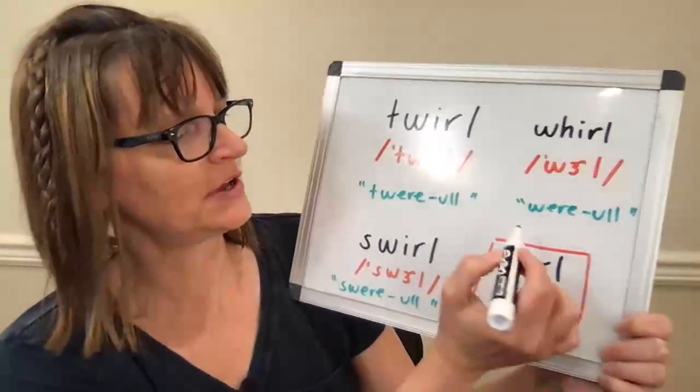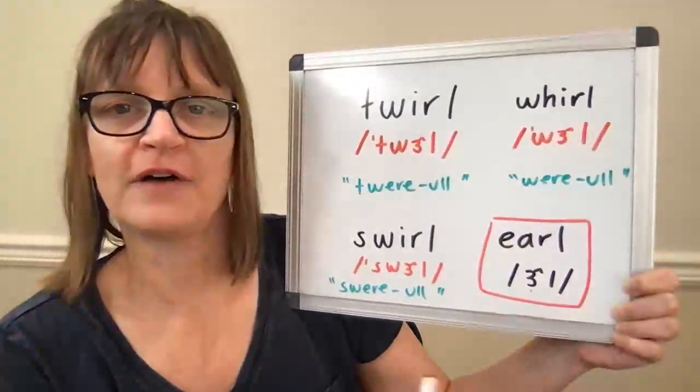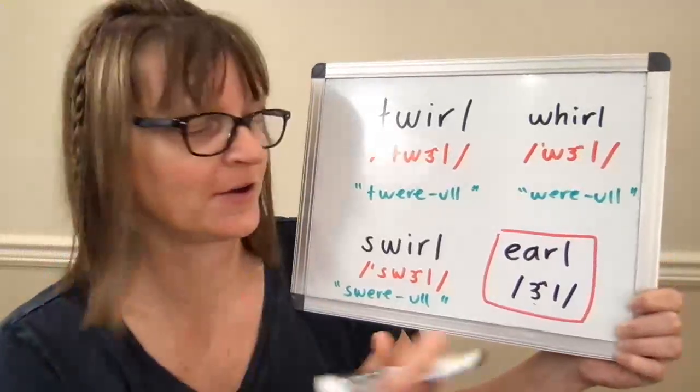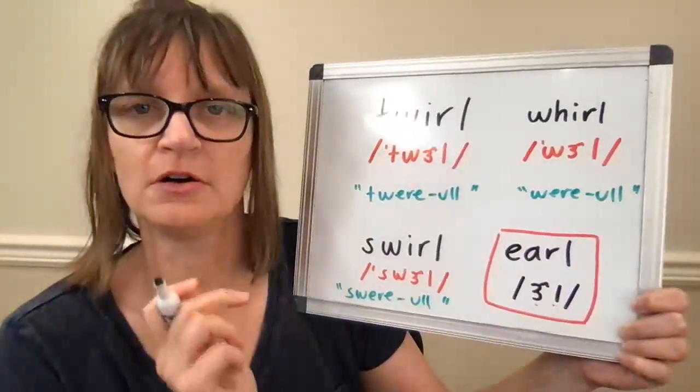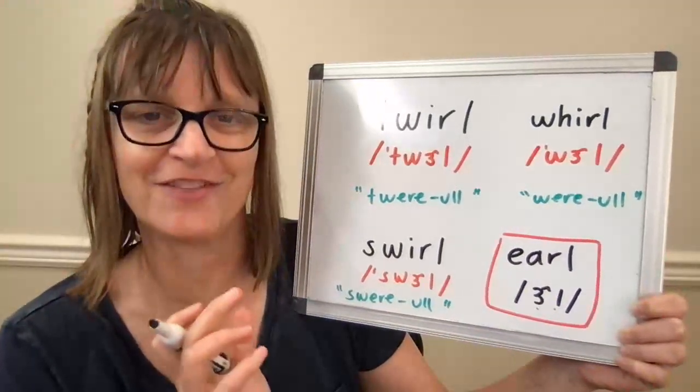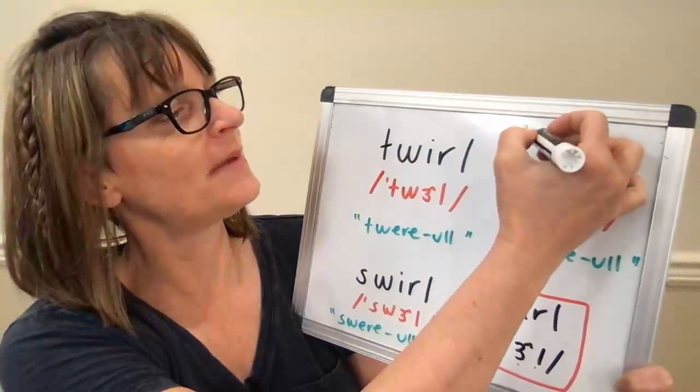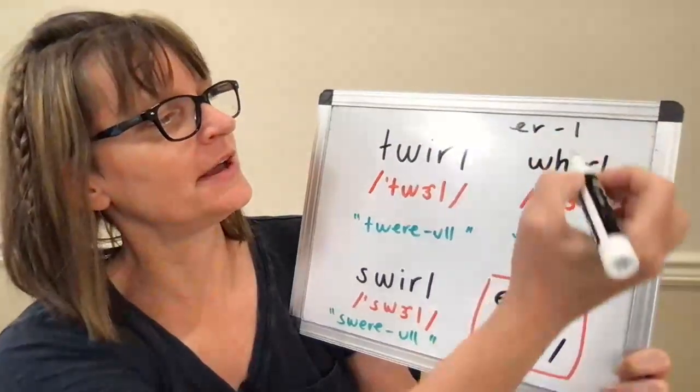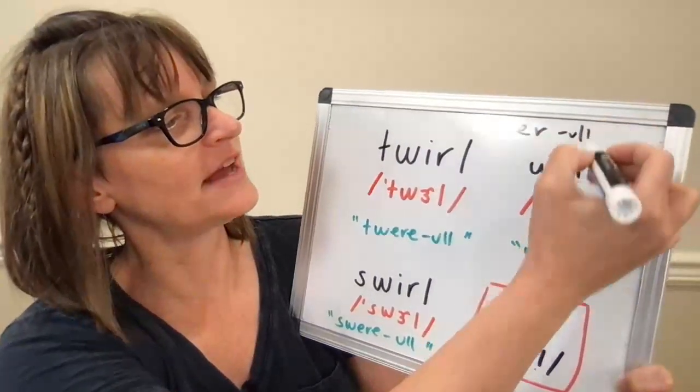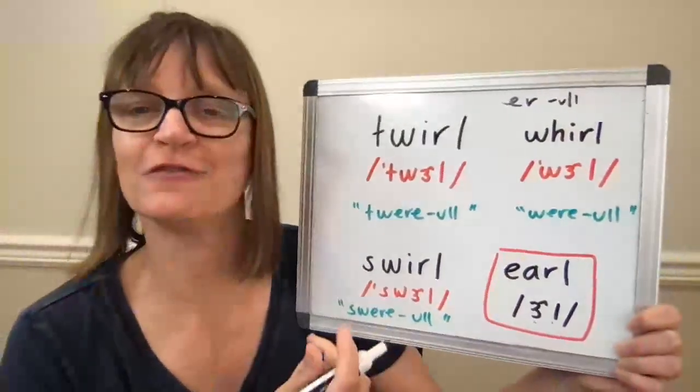So the combination of the vowel er, that tight American R, and a dark ul, the L sound that we have at the ends of words in American English. So being able to go from my ur to my ul sound is what I need for all of these words.